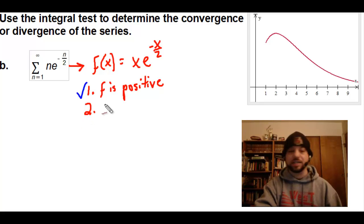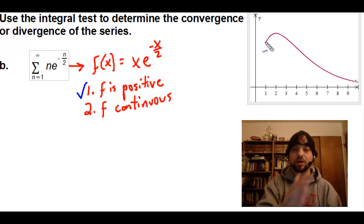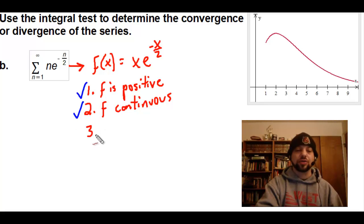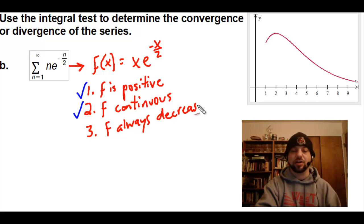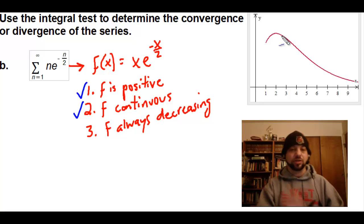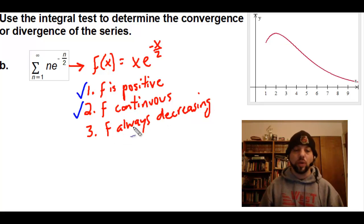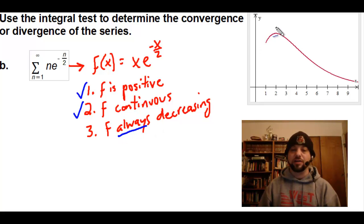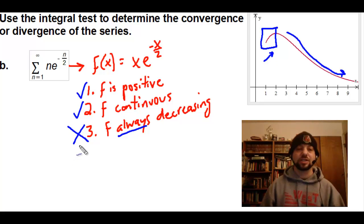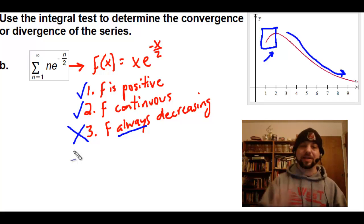Our third condition is that f must always be decreasing. Looking at the graph, you could say this graph is decreasing most of the time — certainly, you could argue. However, this condition says f must always be decreasing, and clearly it's not. From 1 to about here, the graph is going up. After that it's going down, and that's fine. But because this little part of it is going up, we have not met our three conditions, and therefore we cannot use the integral test to determine anything about this particular series.